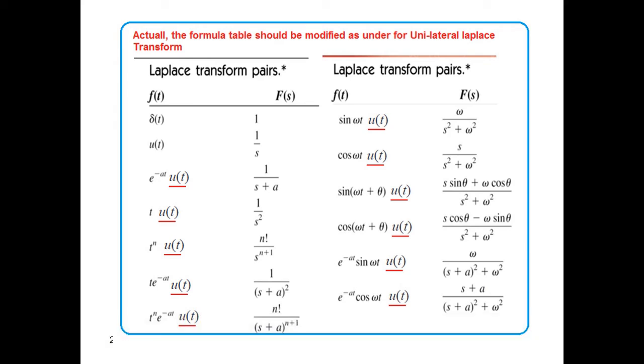Okay, now these two or three slides have the formulas or the transform formulas that we very often refer to. Like you see, for Delta T we already found out that it is 1. We also found out that for unit function or unit U(t) it is 1 over s. We also found out that for e raised to the power at U(t) it is 1 over s plus a.